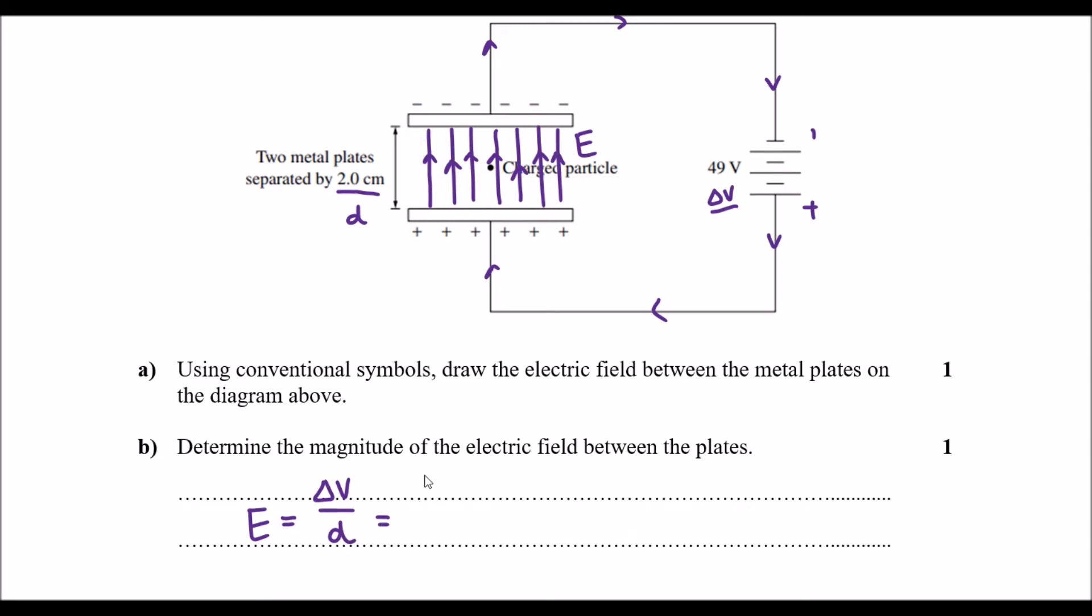And in this problem I know that the voltage is 49 and I know the distance in separation is 2 centimeters. This needs to be converted in the correct SI units of meters. So I'm going to do this in scientific notation. 10 to the minus 2, or 2.0 times 10 to the power of negative 2. And if I plug that into my calculator, let's see what we get.